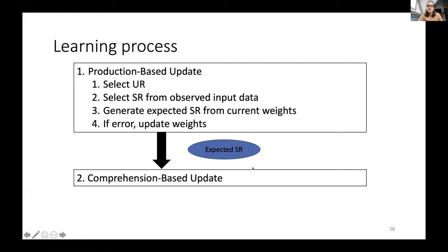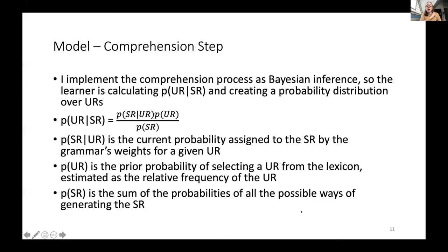Our production step remains the same, but now we take the expected SR and pass it on to a comprehension-based update. The comprehension process is a Bayesian inference problem: the learner calculates the probability of URs given this SR, creating a probability distribution over URs. With Bayes' law, the probability of UR given SR equals the probability of SR given UR times the probability of UR over the probability of SR.